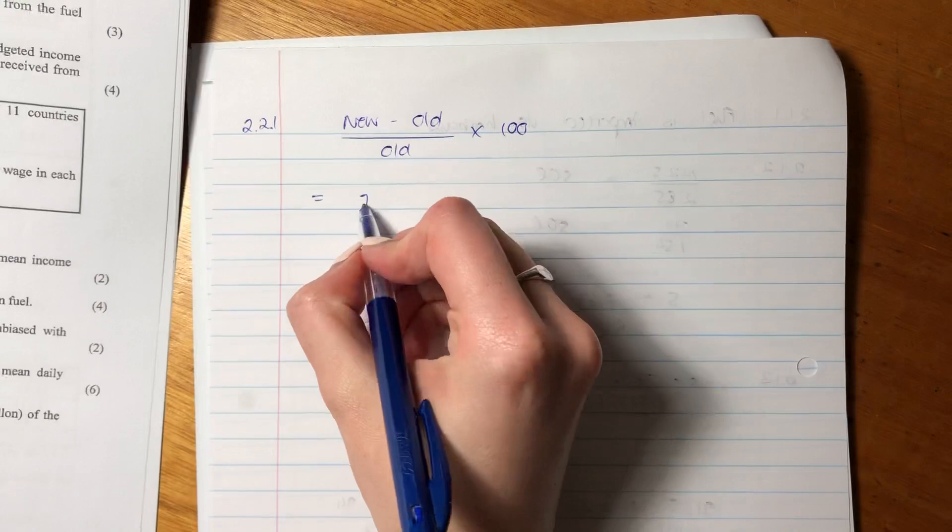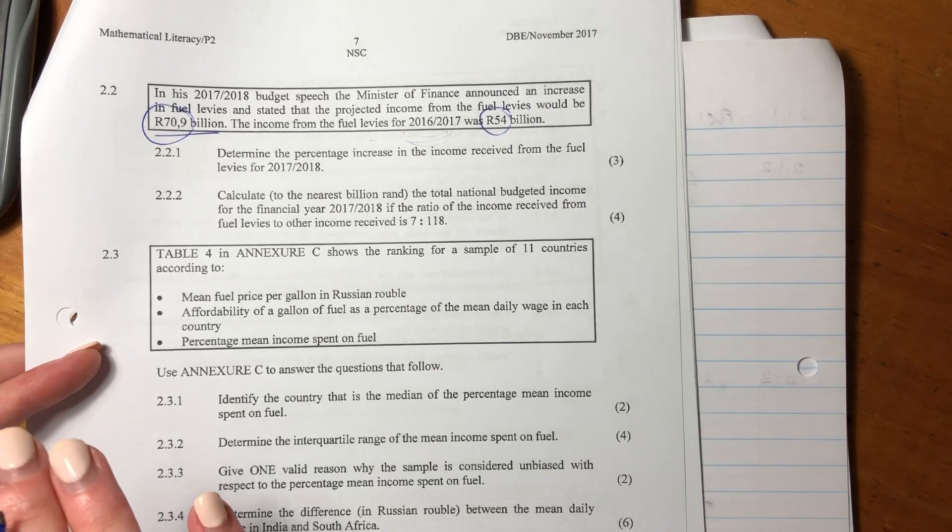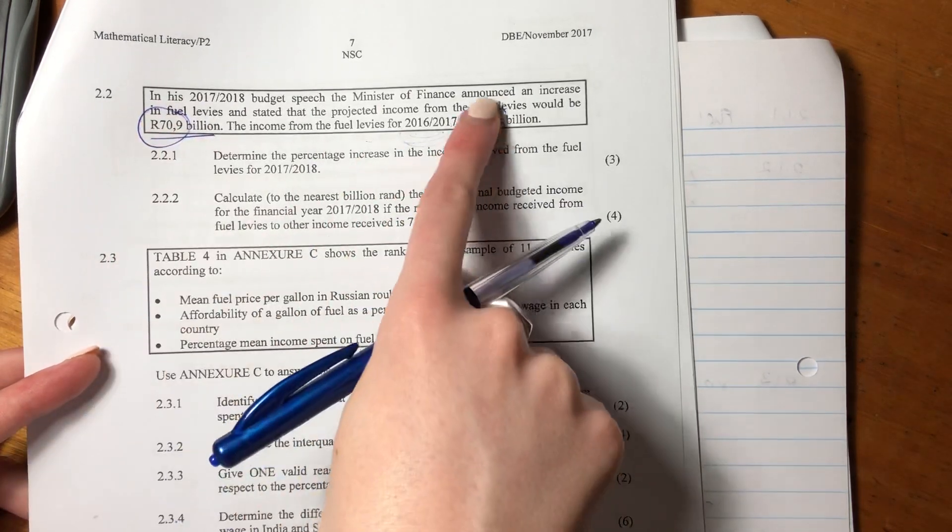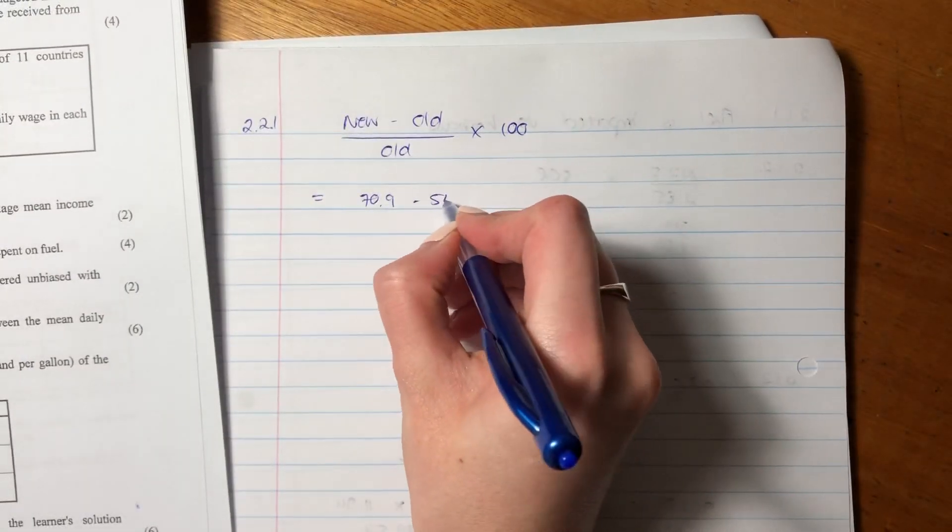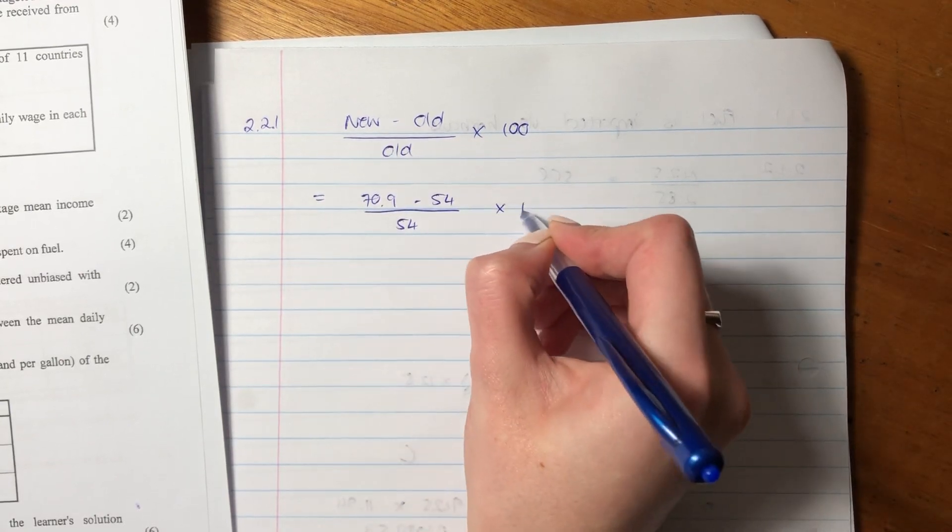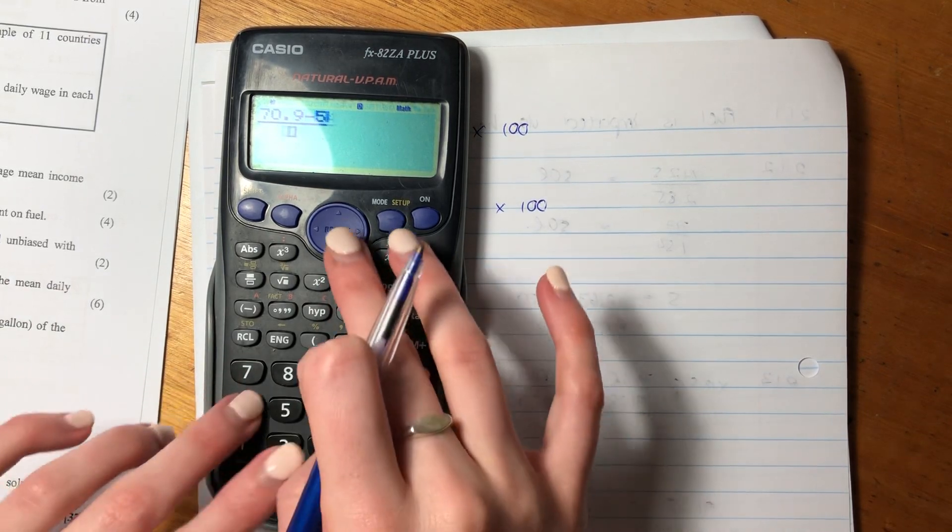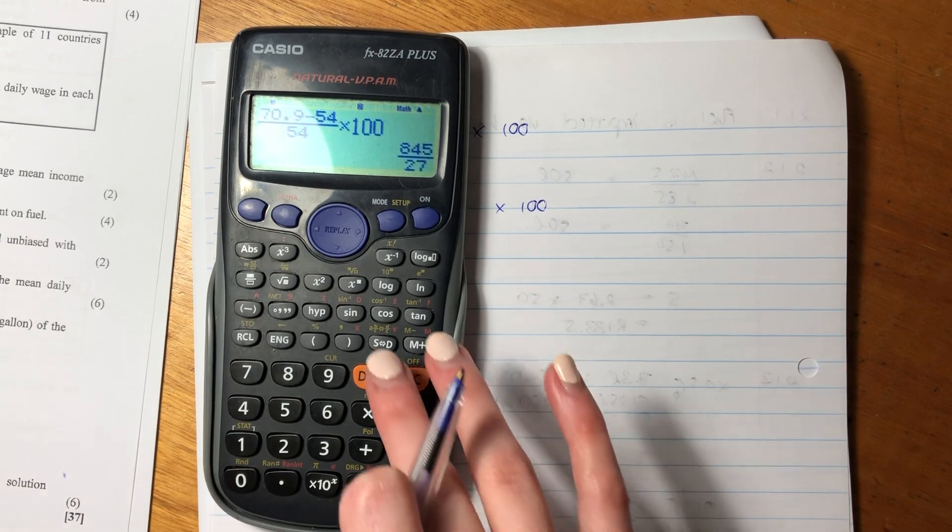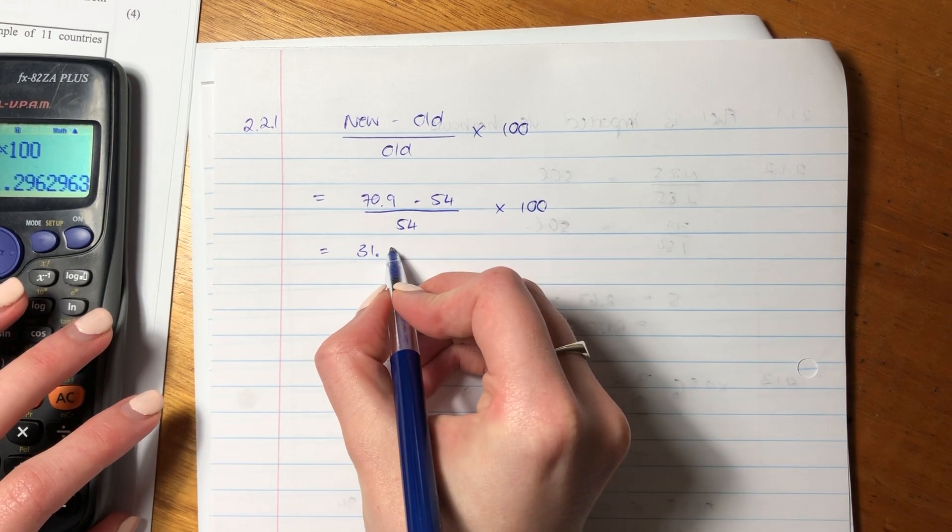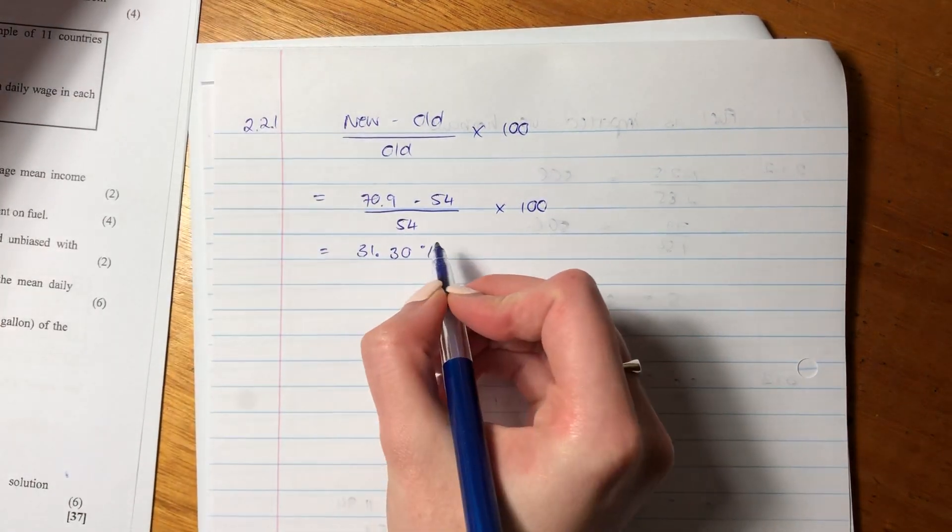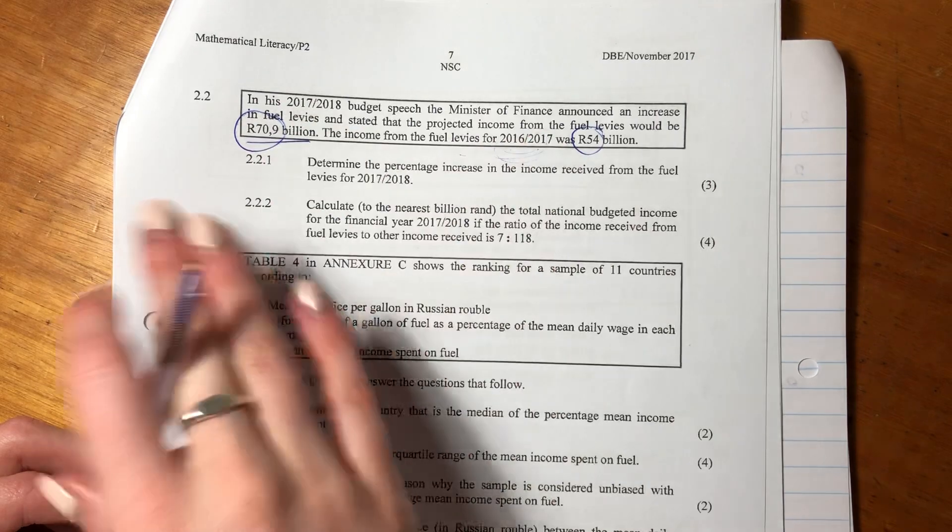So our new amount is 70.9. You don't have to write out all the zeros for billion. You can just keep it in this format, as long as everything is in the same format. So you're comparing like with like. These are both billions, so we can just keep it like that. Over 54 times 100. Put that into your calculator. The percentage increase is 31.30%. We generally round off to two decimal places.